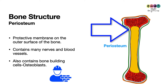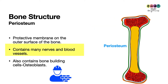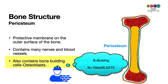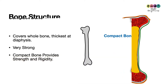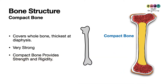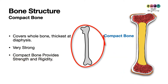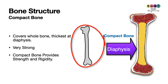You can see the periosteum outlined in green in the diagram. This protective membrane contains many nerves and blood vessels, and it also contains special bone-building cells called osteoblasts — 'B' for building, osteoblasts. The type of bone covering the whole bone surface is compact bone, but it's thickest at the diaphysis, at the shaft.